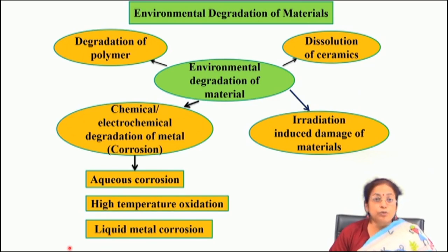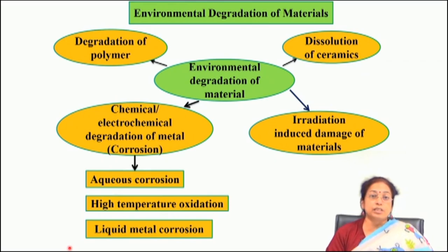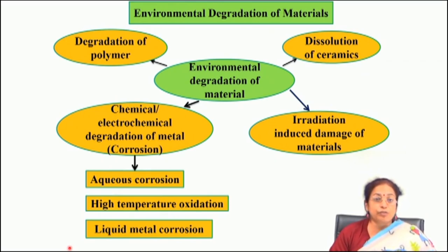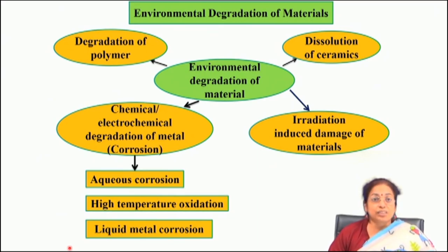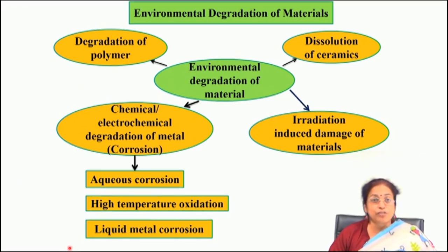In order to know which surface engineering technique may be applied for prevention of corrosion, it is very important to know the different types of corrosion and the surface microstructure and composition required for prevention of corrosion, as well as the surface engineering tool to apply for modification or structure change on the surface. In the next few slides I will briefly discuss the different types of corrosion which metallic materials usually face.